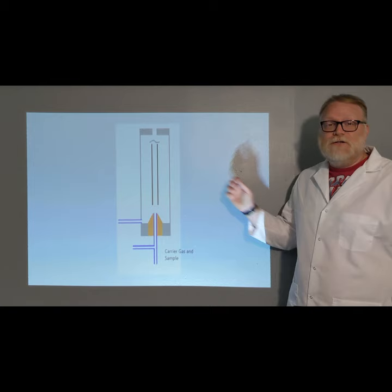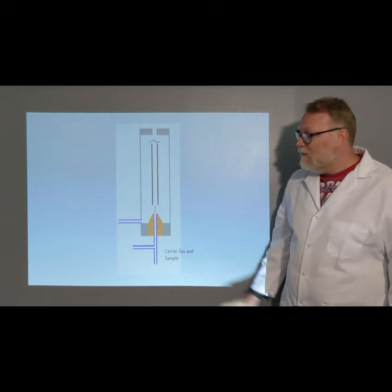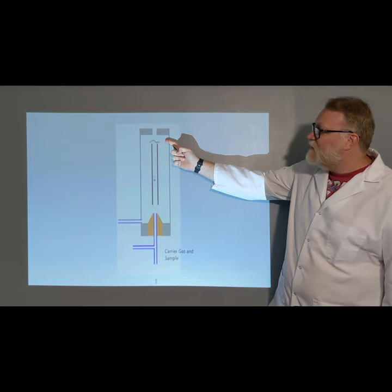This is a simplified version of an FID. Here's our diagram. This orange bit is the jet. This black tube in the center is our electrode or detector itself.